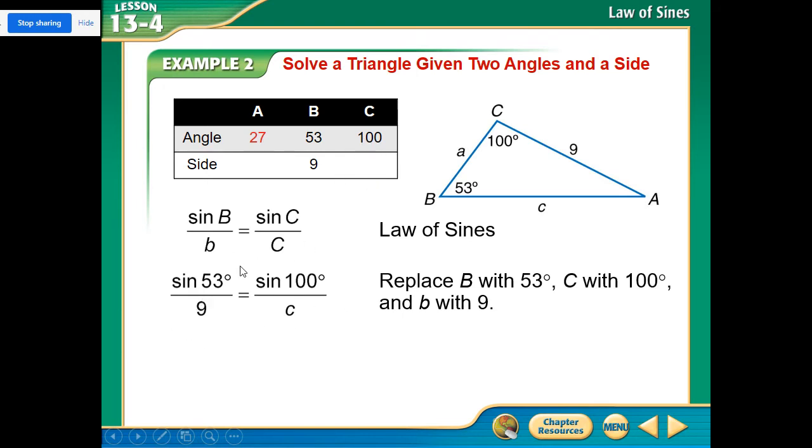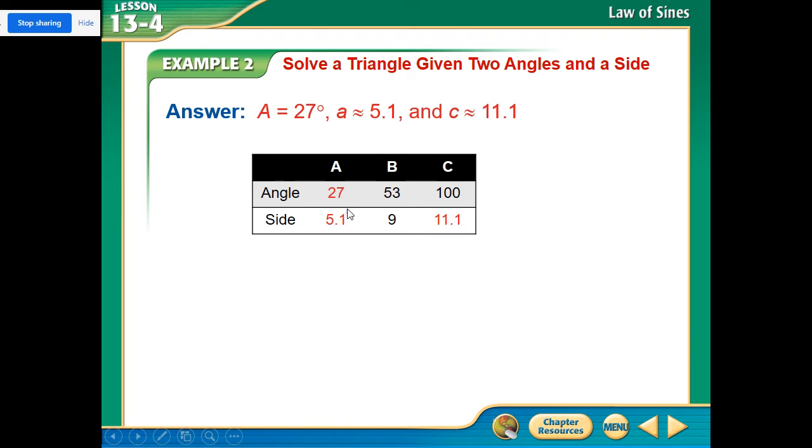So now we can do the other side here by doing sine 53 over 9, still staying with that pair. Now we could theoretically use this one now that we know that value. But might as well stay with the one we know and sine 100. Cross multiply again and we get 11.1. So then filling in our chart, notice the red ones are our actual answers and the black ones are what was given.